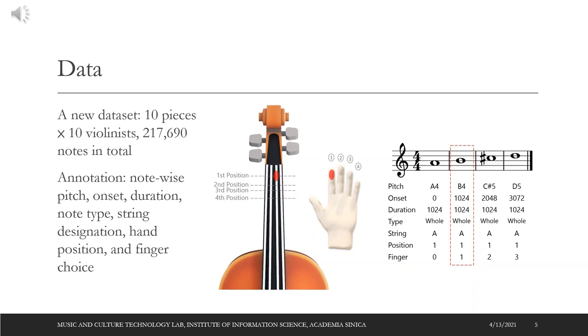To train our model, we compile a new dataset which contains 10 violin pieces and the corresponding note-by-note annotations by 10 professional musicians. Given the dataset, violinists are recruited to annotate the fingerings according to their performance habits, resulting in more than 200 kilo note annotations in total. The annotations specify the detailed performance attributes of each note, such as pitch, onset, duration, note type, string designation, hand position, and finger.